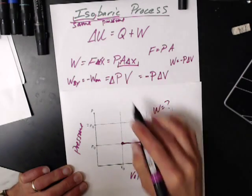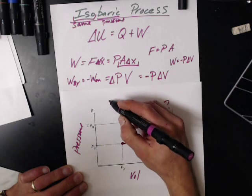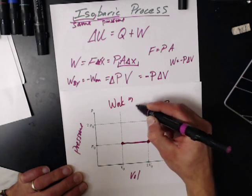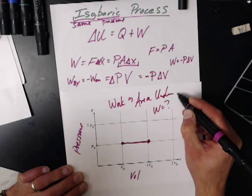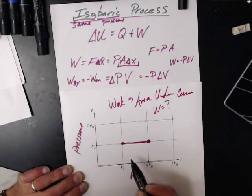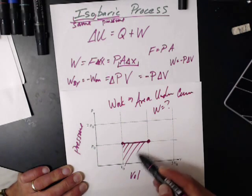Wait, work is F delta X, this is P delta V. Work is always the area under the curve. So, this is how much work that's being done.